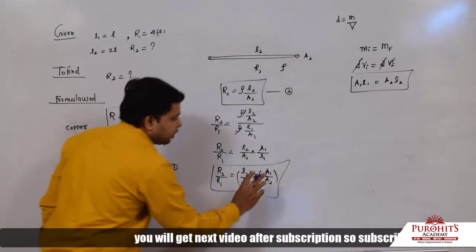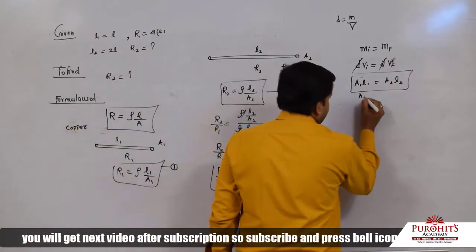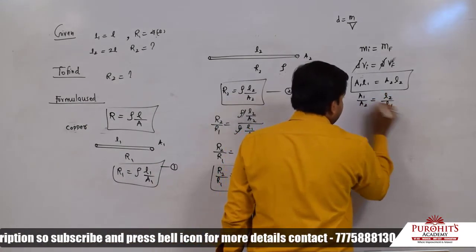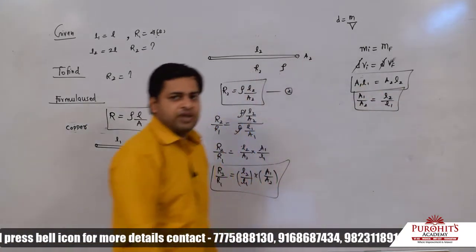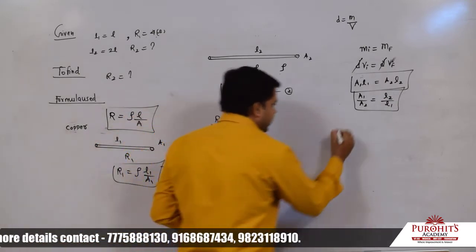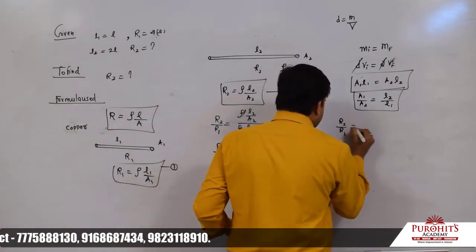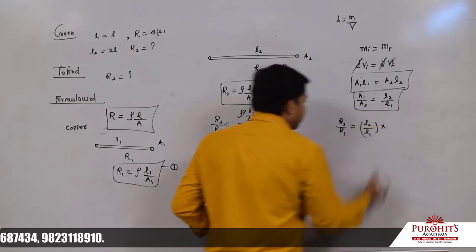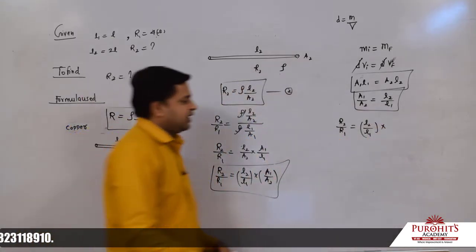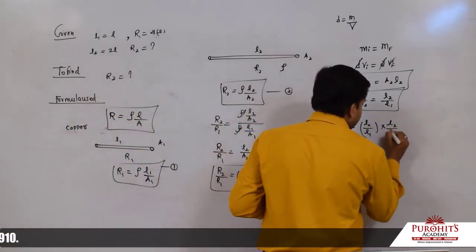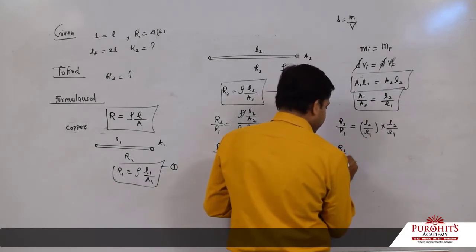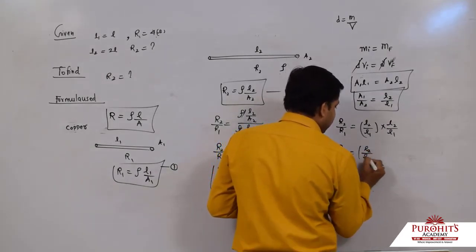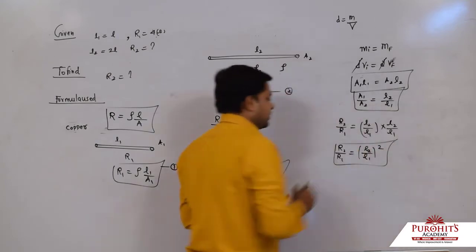We need the variation with length, so we need A₁/A₂. From A₁·l₁ = A₂·l₂, we get A₁/A₂ = l₂/l₁. Substituting into R₂/R₁ = (l₂/l₁) × (A₁/A₂), we get R₂/R₁ = (l₂/l₁) × (l₂/l₁) = (l₂/l₁)².